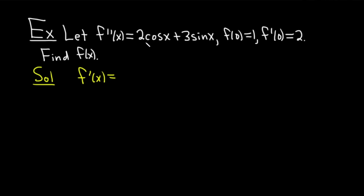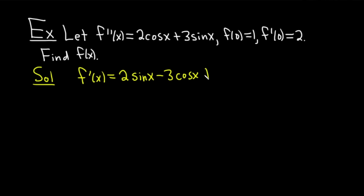We're antidifferentiating, so we think backwards. What's a function whose derivative is cosine? That's going to be sine, so we get 2 sine x. Then we antidifferentiate sine x — what's a function whose derivative is sine? It's negative cosine, so this is negative 3 cosine x. You should always check: the derivative of 2 sine x is 2 cosine x — checks. And the derivative of cosine is negative sine, but we already have a negative, so it's positive — checks. Then we add plus C.